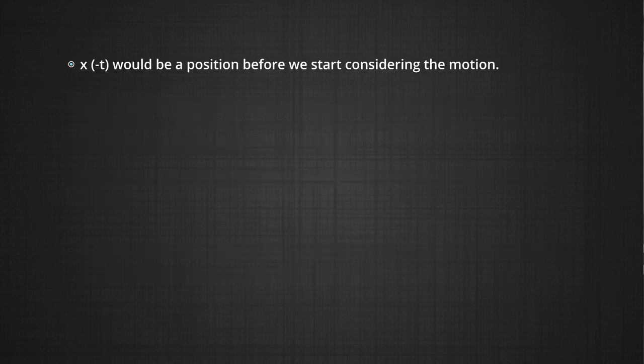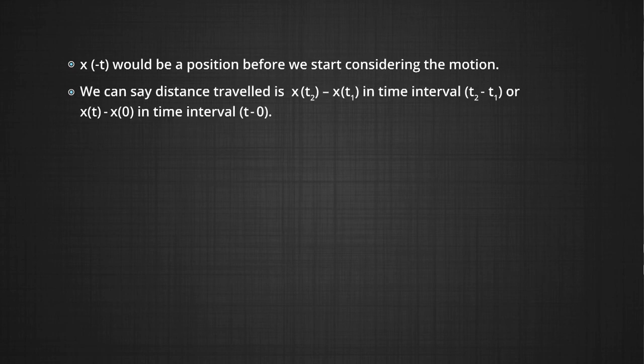X minus t would be a position before we start considering the motion. We can say the distance travelled is xt2 minus xt1 in time interval t2 minus t1, or xt minus x0 in time interval t minus 0.